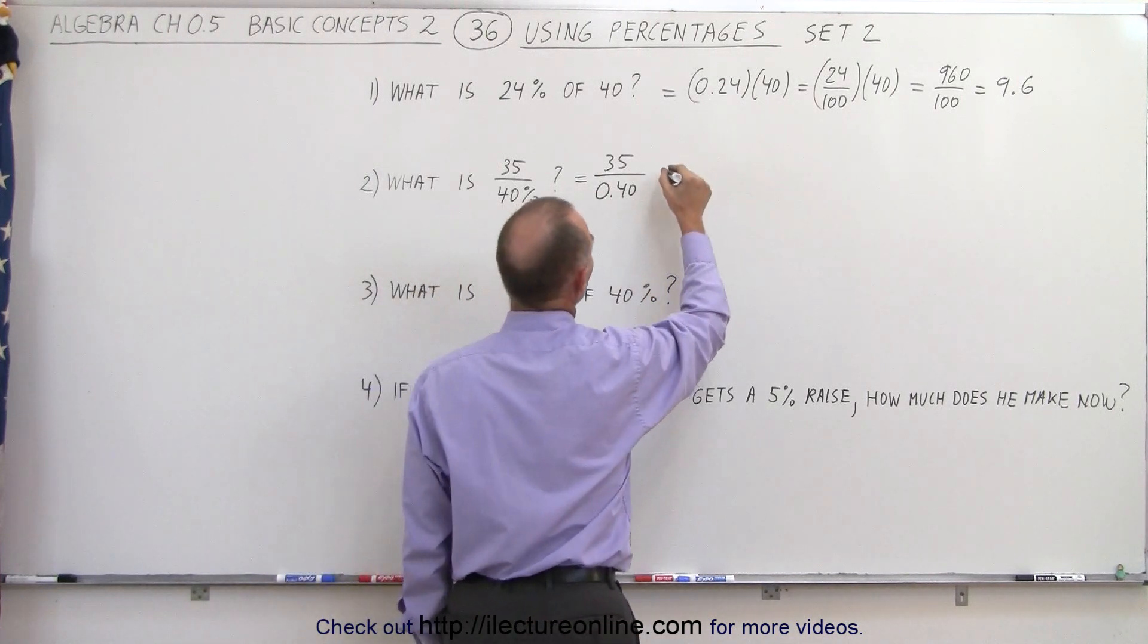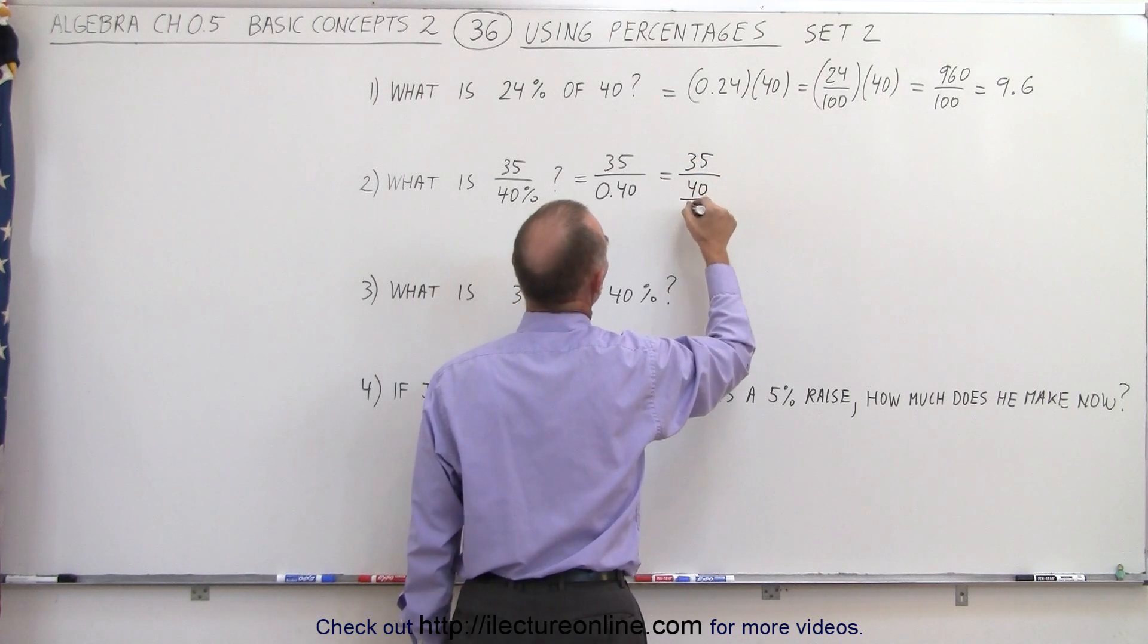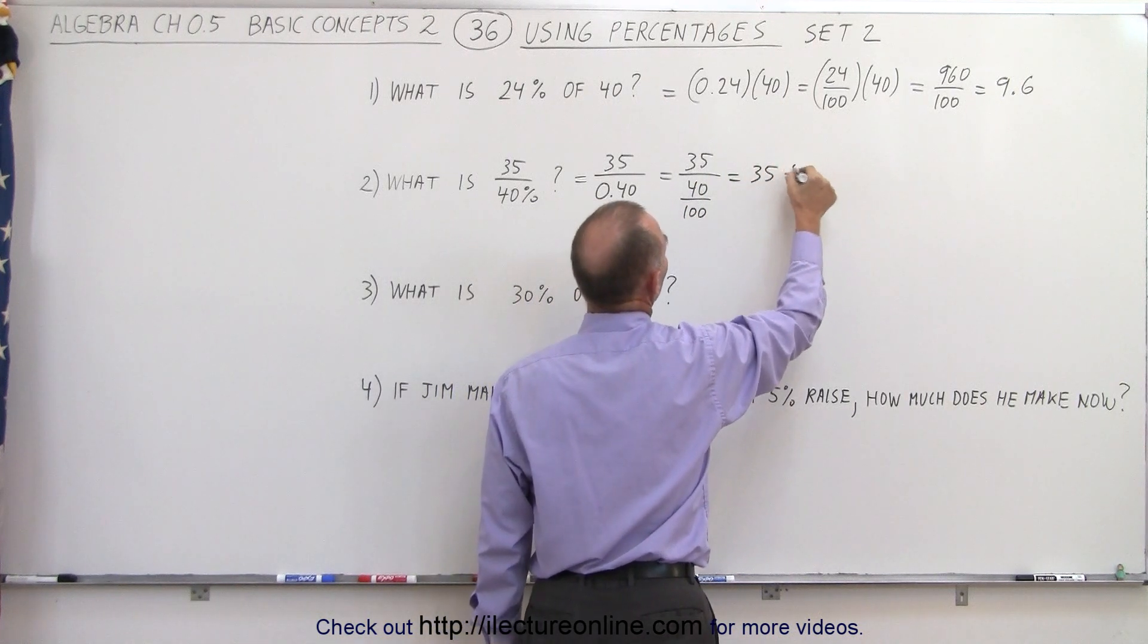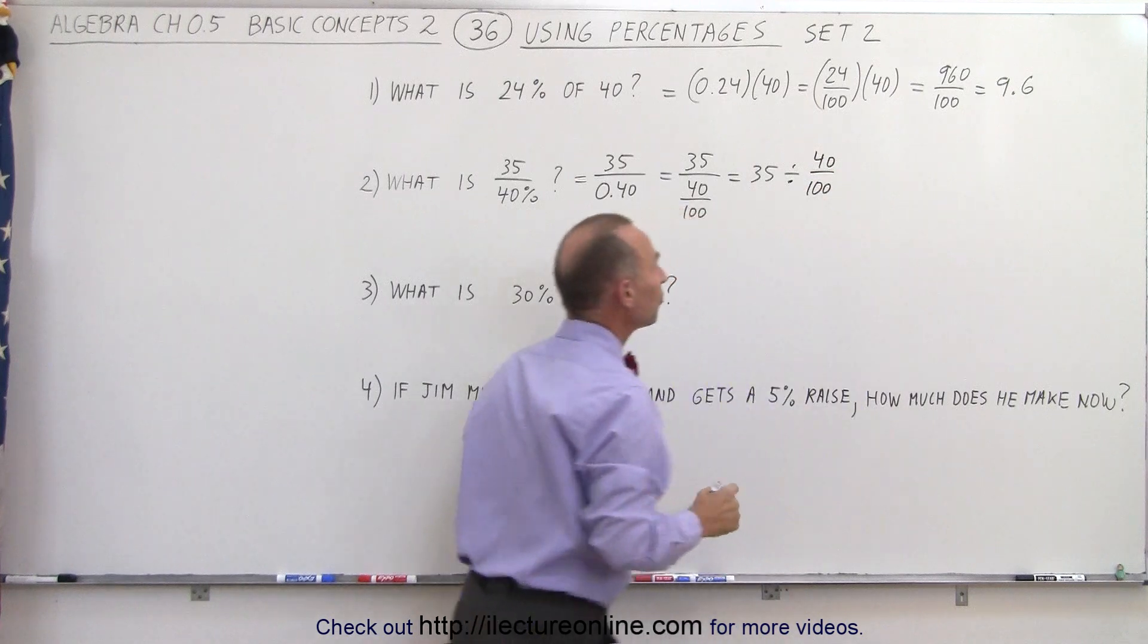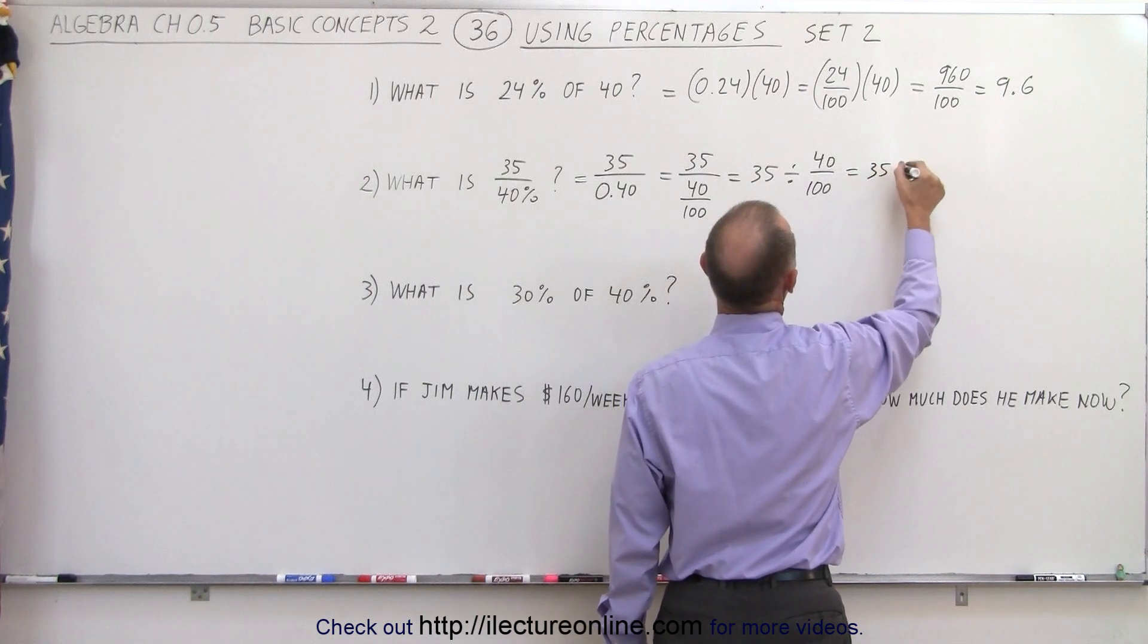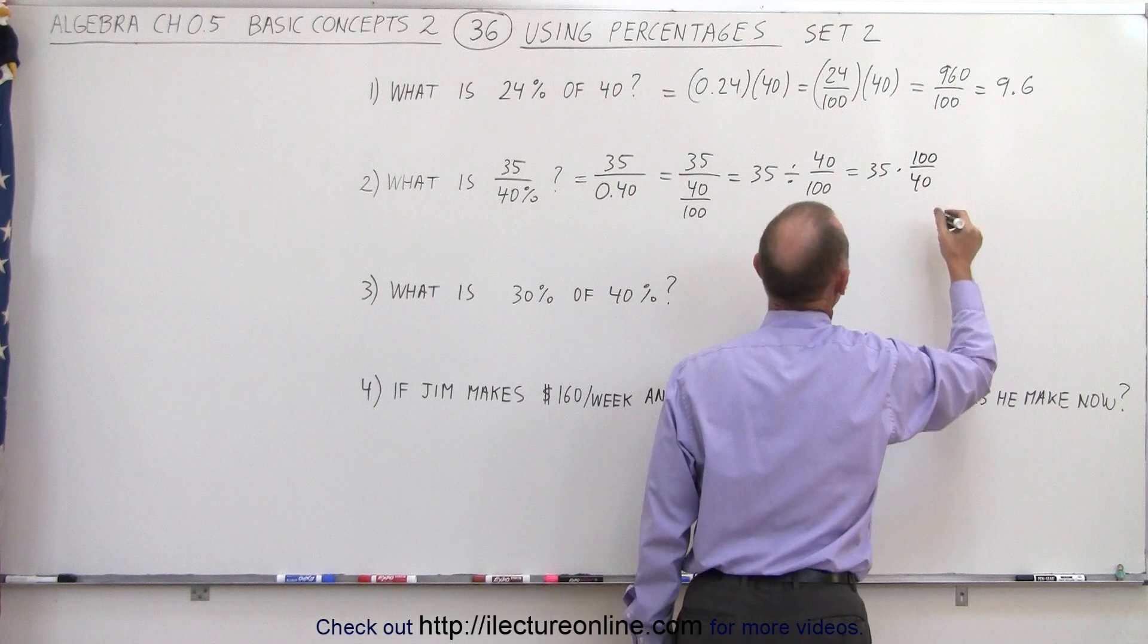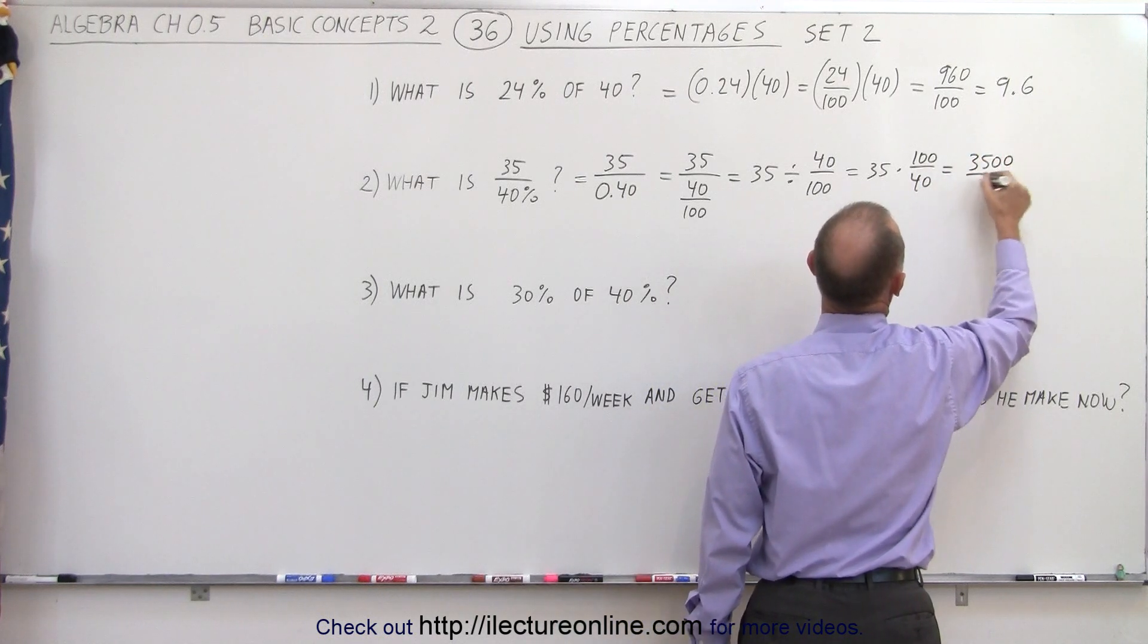Another way to say that is this is equal to 35 divided by 40 over 100, or this is equal to 35 divided by the fraction 40 divided by 100, which means that can be written as the product of its inverse. So this is equal to 35 multiplied times 100 over 40. And so this would be equal to 3,500 divided by 40.